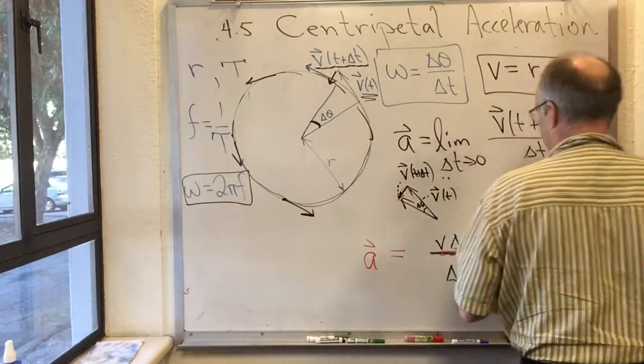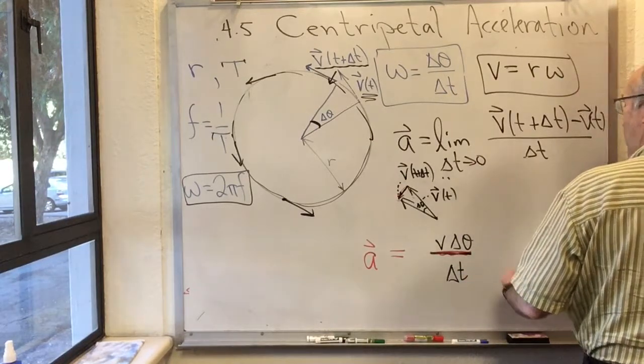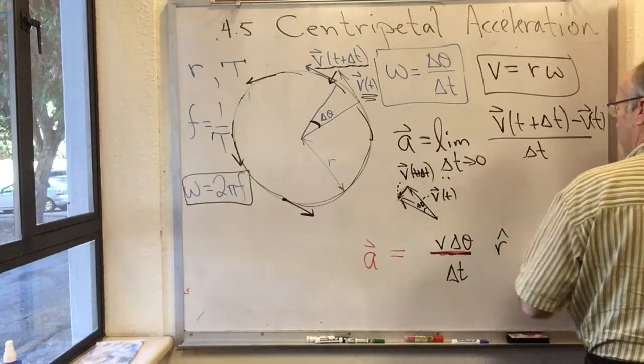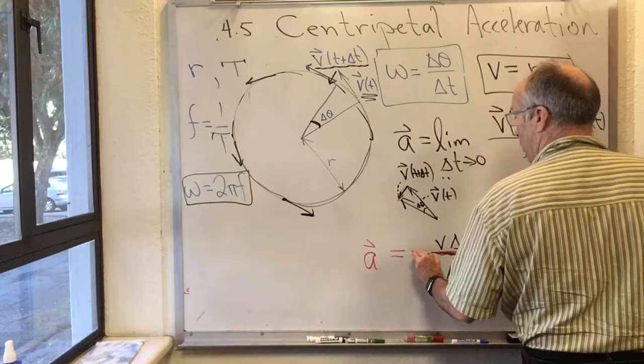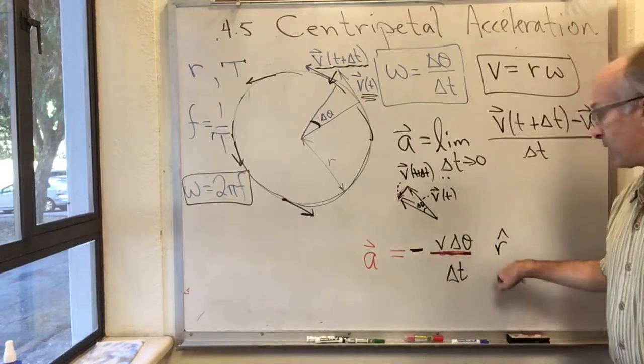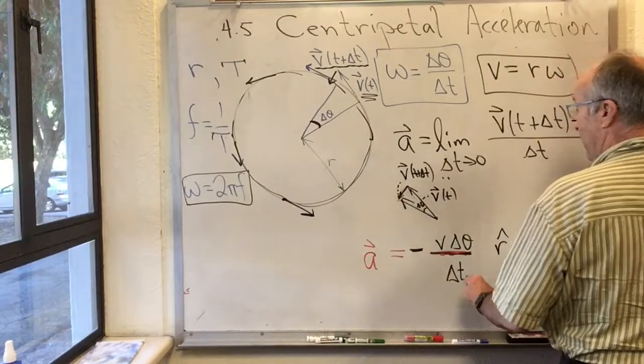So the direction that it points is inwards, and we usually write that, there's a way of writing that. We say, I have an outward pointing vector that I call r hat. So the inward pointing vector would be that, with a minus sign, times r hat. Now we're almost there.